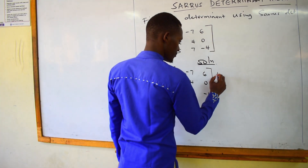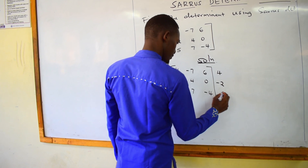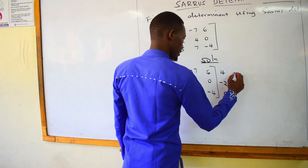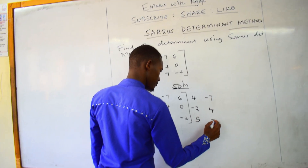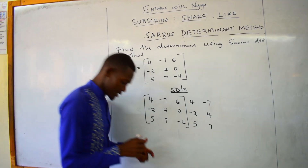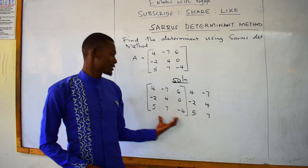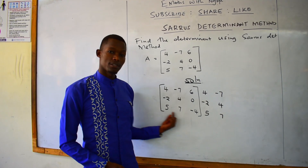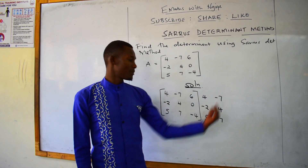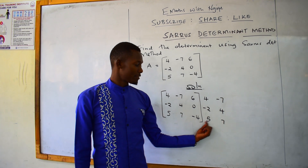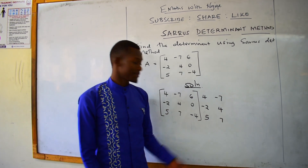You rewrite those two columns again outside the matrix on the right-hand side. So you have 4, negative 2, 5, then negative 7, 4, and 7 — the same elements repeated. You take the first two columns and rewrite them on the right-hand side of the matrix.